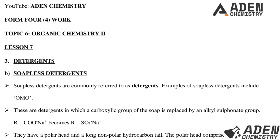Soapless detergents are commonly referred to simply as detergents, while soapy detergents are also known as soaps. These are detergents in which the carboxylate group of soap is replaced by an alkyl sulfonate group. The formula for soap is R–COO–Na+ or K+, where R is the long-chain hydrocarbon and COO is the carboxylate group.